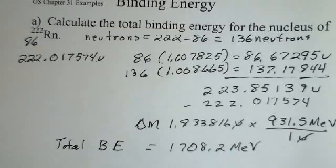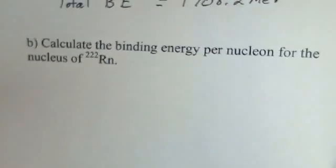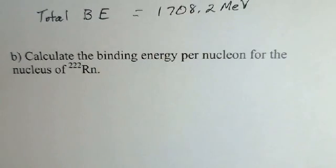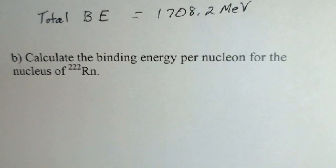Our second calculation, calculate the binding energy per nucleon. What's a nucleon? Proton or neutron. How many of those do we have for radon-222? We have 222.